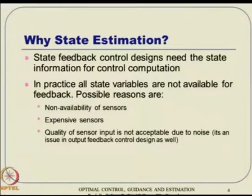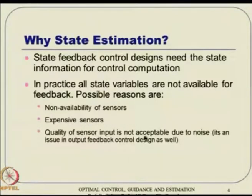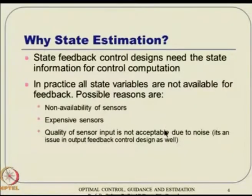For example, a seeker in a missile is typically very expensive. So unless you are really sure that everything else works, you do not put it there; you want some sort of validation before that. Preliminary launches are typically done with respect to radar data, not necessarily with respect to seekers. That is the reason — the sensor is very expensive, and we do not want to just use it like that. Sometimes the quality of the sensor is not acceptable because of noise content, especially MEMS-level sensors, which give some data but the information content is very noisy.